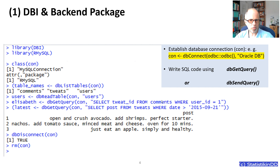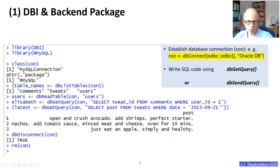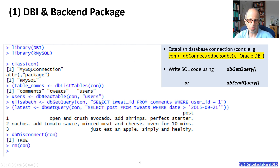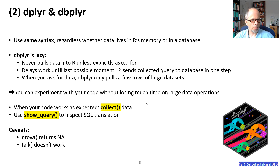Here's an example. You first need to establish a database connection using the dbConnect function. Then you can use a couple of functions to access elements of the database, for example dbListTables or dbReadTable. The main workhorse for working with the database would probably be dbGetQuery, or in some instances dbSendQuery if you want to manipulate the database. For dbGetQuery, the first argument is always the database connection and the second argument is a quoted SQL expression. So if you know SQL or have SQL code somewhere else, this is a way of embedding it in your R scripts.